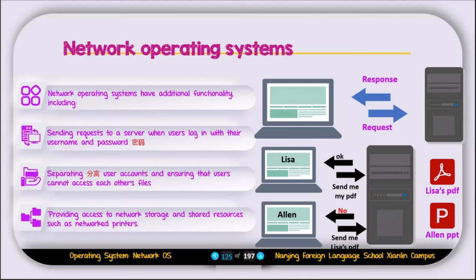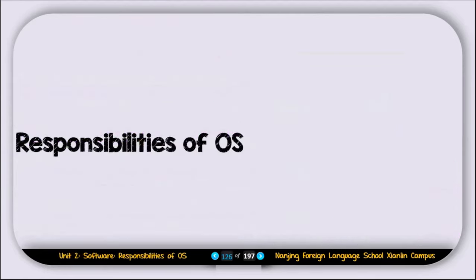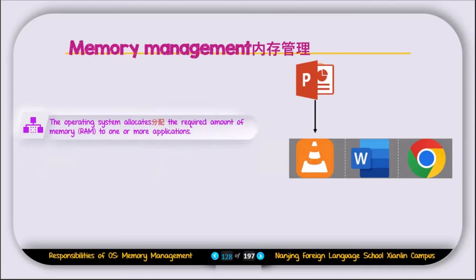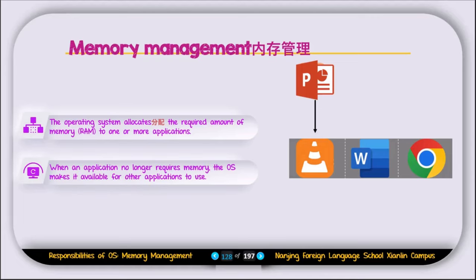Now let's discuss the responsibilities of the operating system. There are four major responsibilities: number one is memory management, number two is resource management, number three is security, and the last one is print spooling. The operating system allocates the required amount of memory or RAM to one or more applications. When an application no longer requires memory, the operating system makes it available for other applications to use.